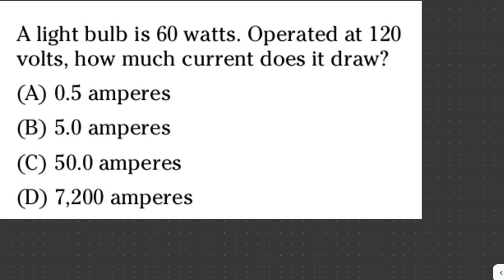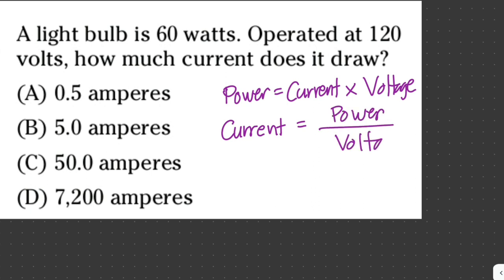A light bulb is 60 watts, operated at 120 volts. How much current does it draw? Power is equal to the product of the current and voltage. To solve for current, we divide power by voltage. So current equals power over voltage. We're given the power, which is 60 watts, and the voltage, which is 120 volts. We just have to plug in all the values.